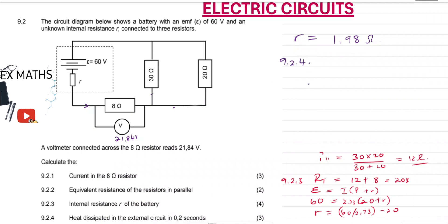9.2.4: heat dissipated in the external circuit in 0.2 seconds — this is in the form of energy. We use the formula for energy: W equals I squared times R times delta T, where delta T is the change in time. Our current is 2.73 A, resistance is 20 ohms (total external resistance), and time is 0.2 seconds. This gives us W equal to 29.81 joules.